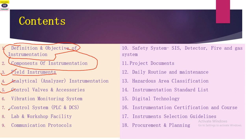The seventh point is the heart of any instrumentation system — PLC and DCS, which are installed to control everything in the plant. We will discuss what PLC is, what DCS is, how these two differ from each other, and how they work together.